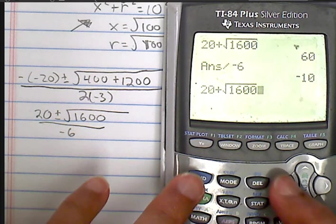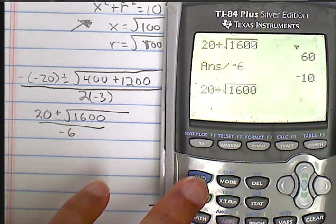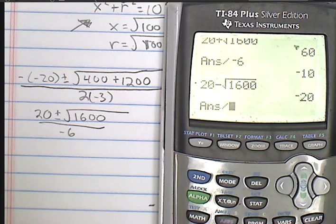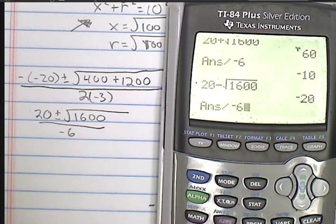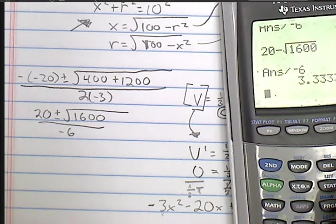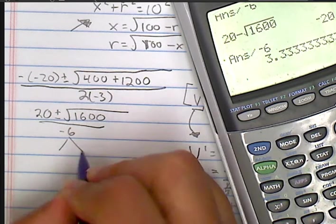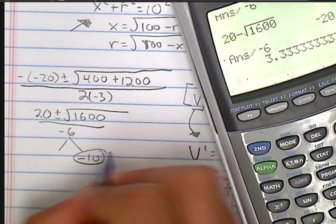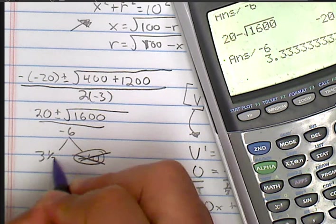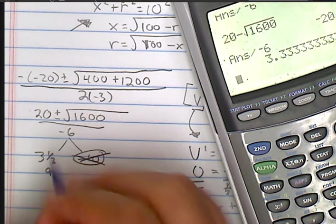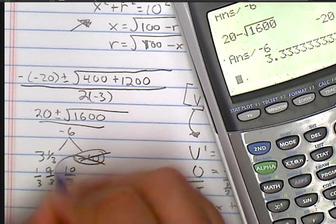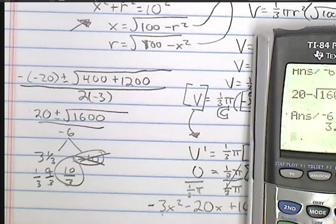That can't work, it's negative. 3 and a third is what our calculator says is the appropriate answer. Negative 10 can't work. So 3 and one third, which is 10 thirds. So we're going to take 10 thirds and we're going to assume that's X.